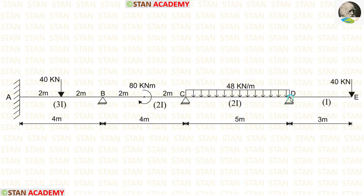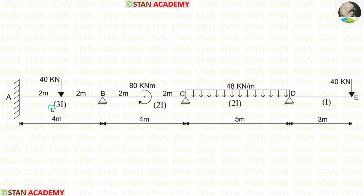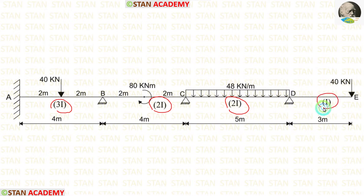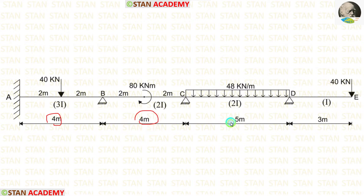In the overhanging span DE, there is a point load of 40 kN acting at point E. The moment of inertia for span AB is 3I, for span BC is 2I, for span CD is 2I, and for the overhanging part it is I. AB and BC are 4 meters long, CD is 5 meters long, and the overhanging part is 3 meters long.